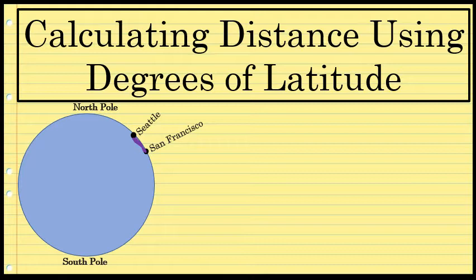Another way to describe that would be to say Seattle and San Francisco have about the same longitude. This process I'm about to describe will work for finding the distance between two locations that have the same longitude.